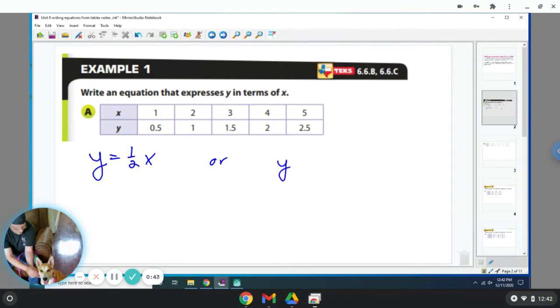And I can see if this works. So I plug this in. When I plug in x for 1, it would be 1 over 2, which is 0.5. When I plug in 2 for x, I'll have 2 over 2, which equals 1. When I plug in 3 for x, I have 3 over 2, which is 1.5. When I plug in 4 for x, I'll have 4 over 2, which is 2.